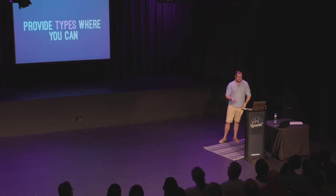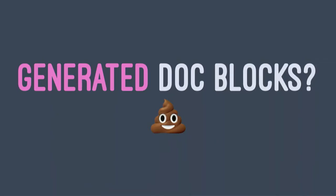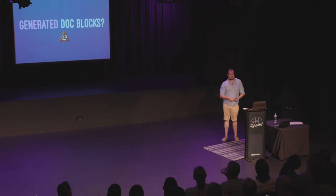PHPStorm has a feature of generated doc blocks. When you're typing a function declaration, it tries to generate doc blocks for you at the top of the class, but they're always wrong — they're generally going to say something mixed, something else mixed. That's because PHPStorm can't go back and infer enough about the code to tell you more about it.